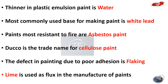The thinner in plastic emulsion paint is water. The most commonly used base for making paint is white lead. Paints most resistant to fire are asbestos paint. Duco is the trade name for cellulose paint. The defect in paint due to poor adhesion is flaking. Lime is used as flux in the manufacture of paint.